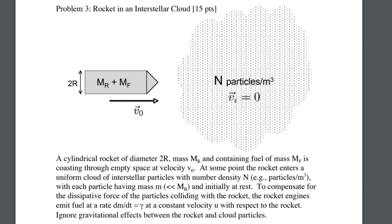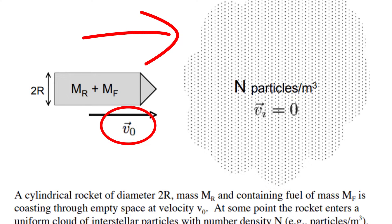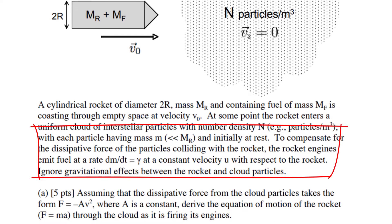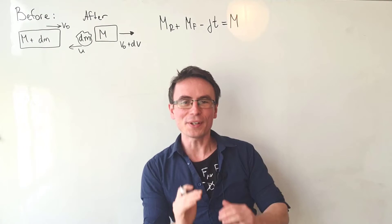We have a rocket moving at a constant speed v₀ that is entering an interstellar dust cloud. The total mass of the system is given by the mass of the rocket plus the mass of the fuel. To compensate for the force of the particles colliding with the rocket, the rocket engines emit fuel at a rate dm/dt equal to γ. Assuming the dissipative force from the cloud particles takes the form F = -av², derive the equation of motion for the rocket.